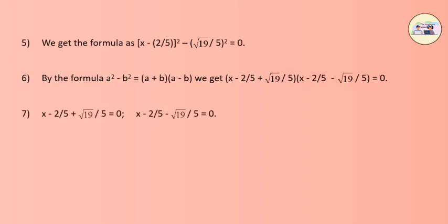Step 7: x minus 2 by 5 plus root 19 by 5 equals to 0, and x minus 2 by 5 minus root 19 by 5 equals to 0. Therefore, Step 8: x equals to 2 plus root 19 by 5, and x equals to 2 minus root 19 by 5. Practice set 2.